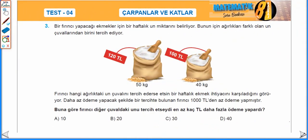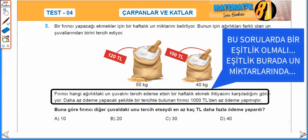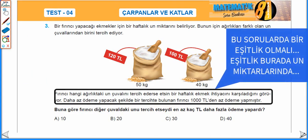Üçüncü sorumuzla devam edelim. Bir fırıncı yapacağı ekmekler için bir haftalık un miktarını veriyor. Bunun için ağırlıkları farklı olan un çuvallarından birini tercih ediyor. Fırıncı hangi ağırlıktaki un çuvalını tercih ederse etsin bir haftalık ekmek ihtiyacını karşıladığını görüyor. Daha az ödeme yapacak şekilde bir tercihte bulunan fırıncı 1000 TL'den az ödeme yapmıştır. Buna göre fırıncı diğer çuvaldaki unu tercih etseydi en az kaç TL daha fazla ödeme yapardı? İhtiyacı olan un miktarı 50'nin ve 40'ın ortak bir katı olmalı.